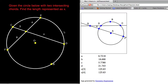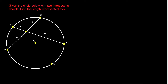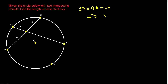If that theorem holds, then for our problem, three times X equals four times six. Four times six is 24, so three times X equals 24, which means X must equal eight.